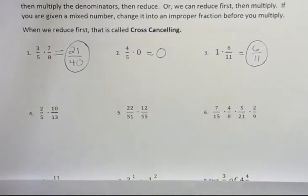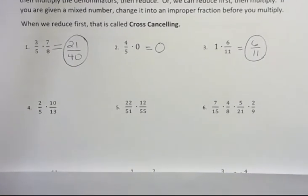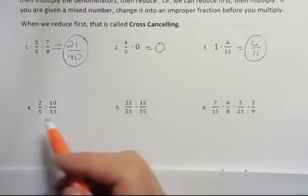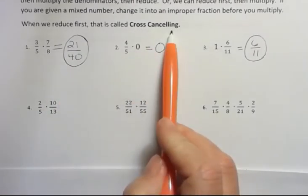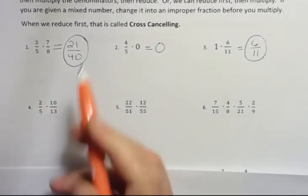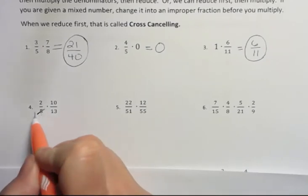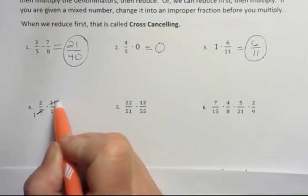What about this one, number 4? 2/5 times 10/13. Well, now here I can do some cross-cancelling because 5 goes into 10. 5 goes into itself one time and it goes into 10 two times.